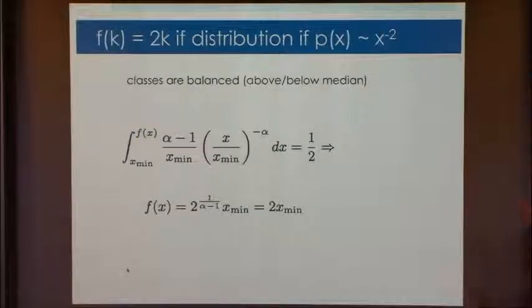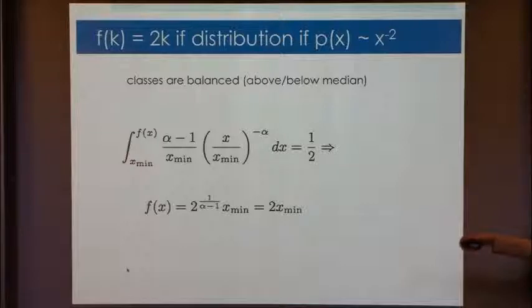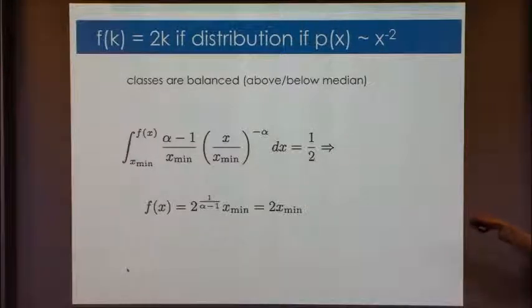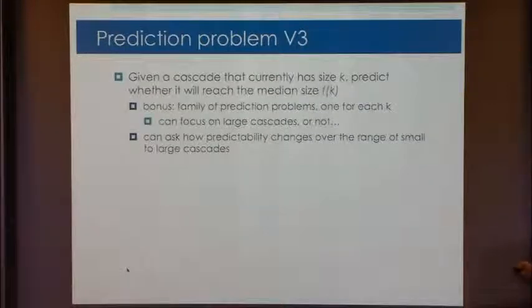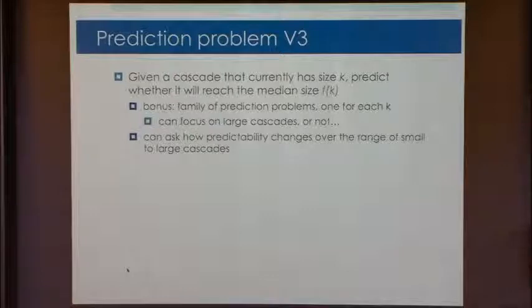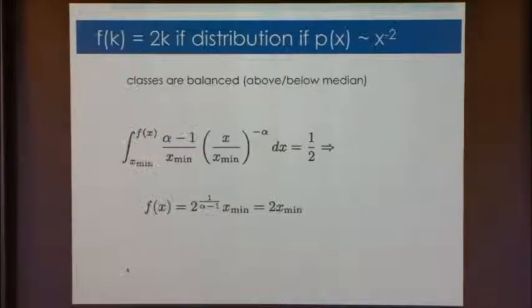And the neat thing about, when your cascade sizes are roughly parallel distributed with exponent two, is that the median is actually twice the current size. So if you just integrate from the size where you are now, and you try to figure out what this function is, where you'll have half of the cascades growing to that size, it ends up just being twice that threshold to which you've already observed the cascade. So we can now just track cascades for different values of k.